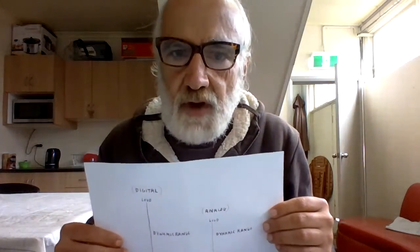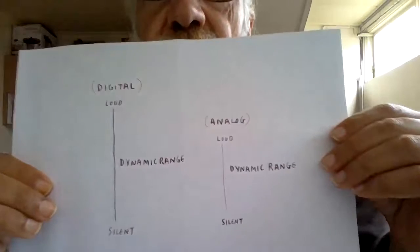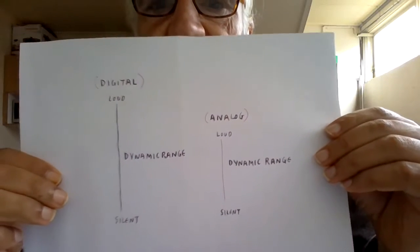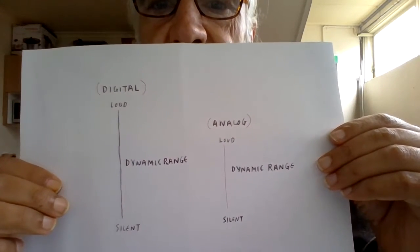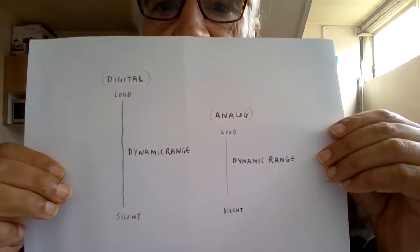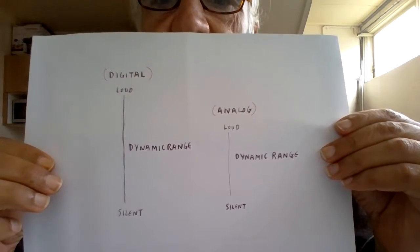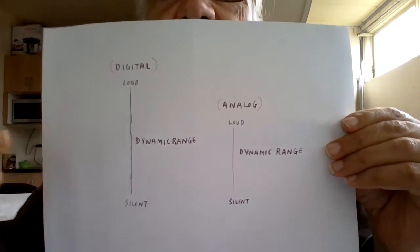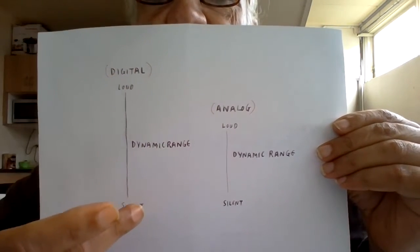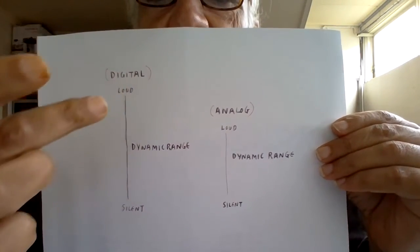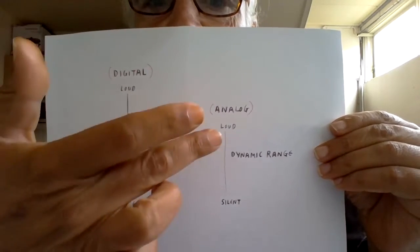In this video I will talk about the main difference between digital sound and analog sound. The main difference is the dynamic range. As you can see here, the digital dynamic range between silent and loud is bigger than the analog.